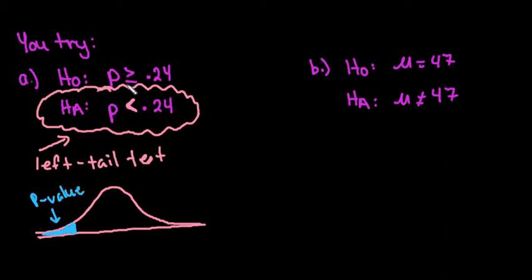This would represent the p-value, which is different than the p here. The p here is the proportion, the population proportion. The p-value is the probability of getting the sample statistics if your null hypothesis were true. So if my population proportion were really 0.24, the p-value tells me how likely it is to get those results.